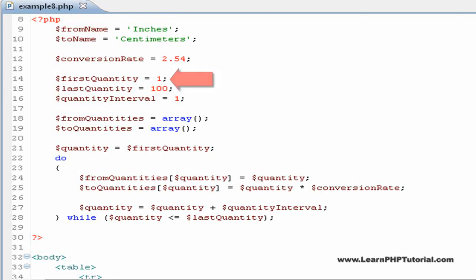We've set up this example to use the variable quantity as a loop counter, with first quantity and last quantity defining the range of values that quantity will hold throughout the execution of the loop. We've also included the variable quantity interval to make it simple to change the distance between each of the quantities we're converting from. Going through the loop here, we can see that quantity is first assigned with the value of first quantity, or 1.